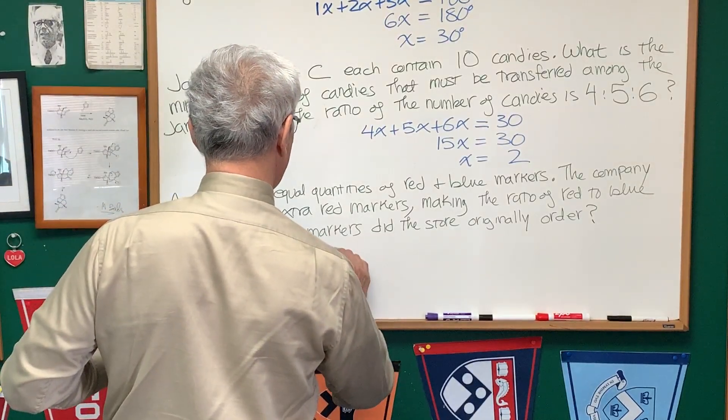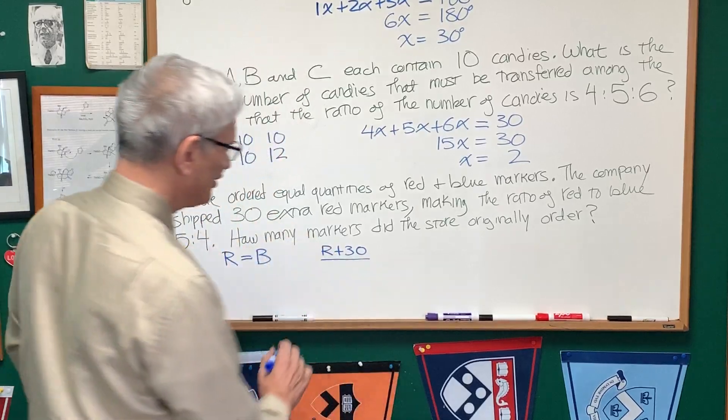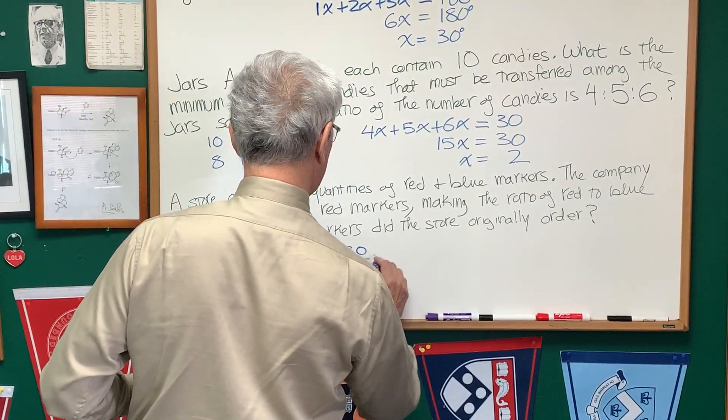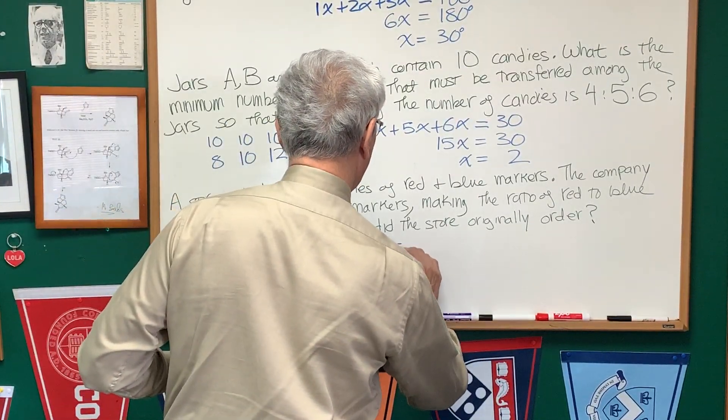However, the company shipped 30 more red markers, so the ratio of those number of markers to the number of blue markers is, as is stated here, 5 to 4. All right.